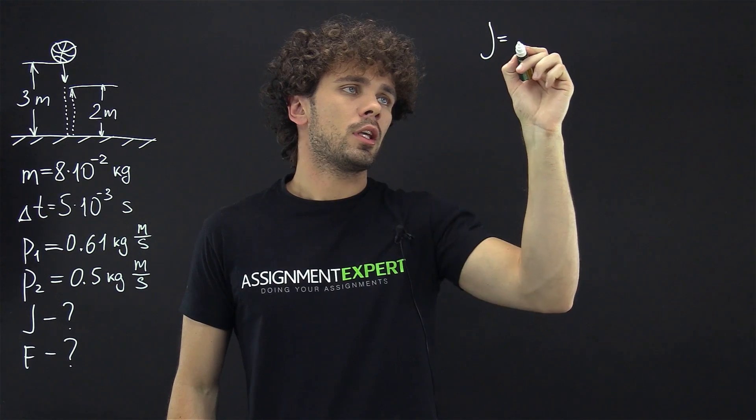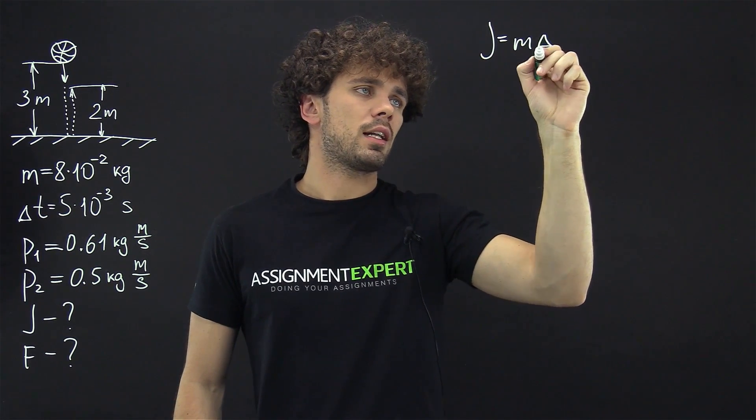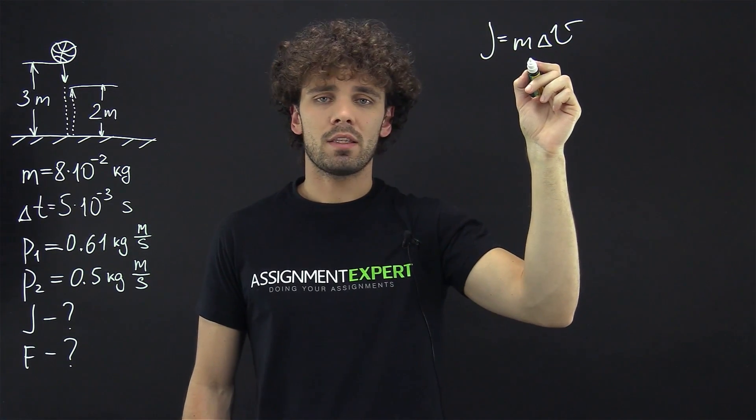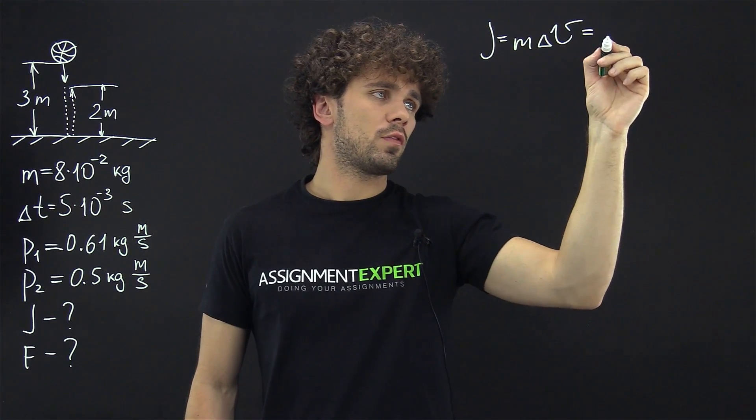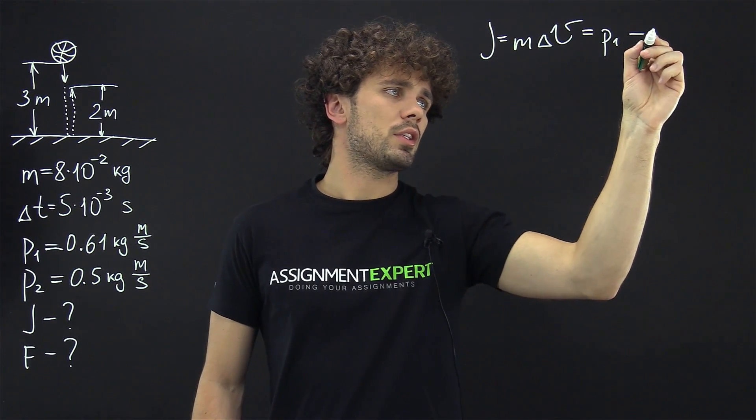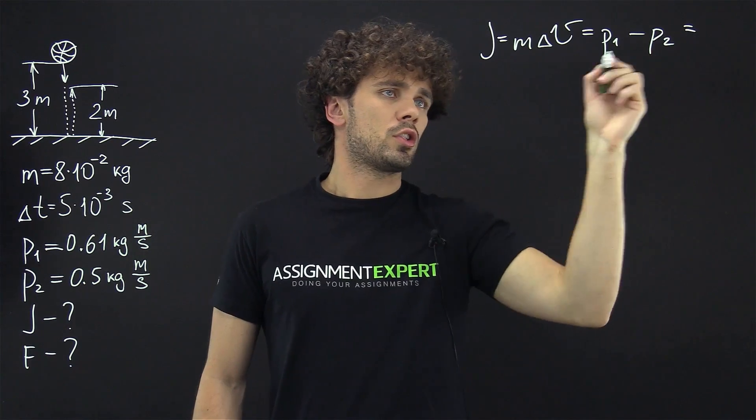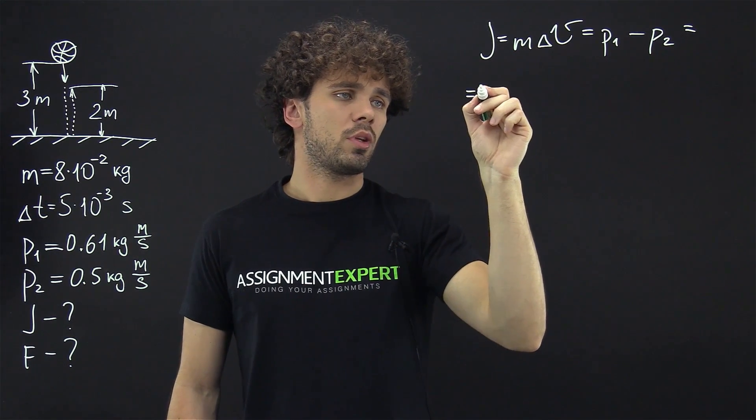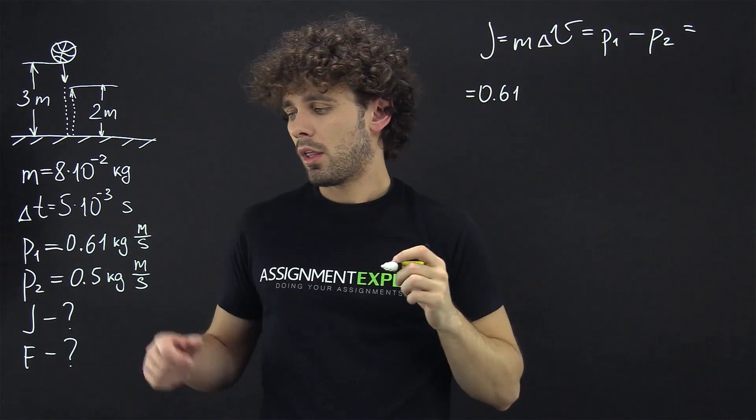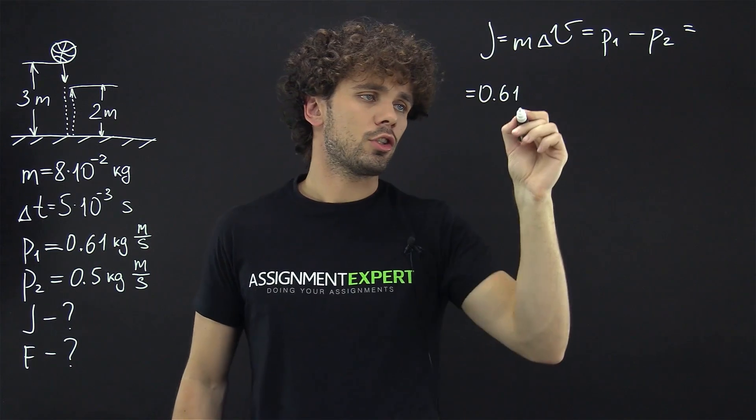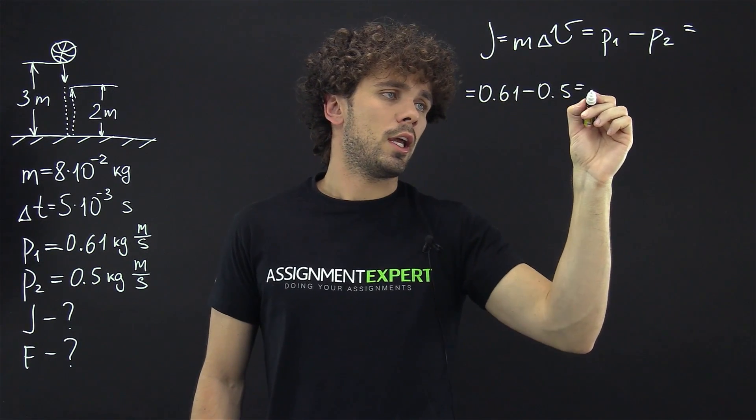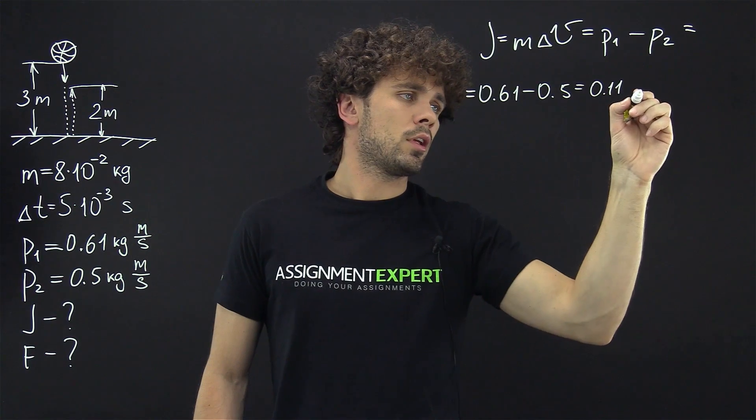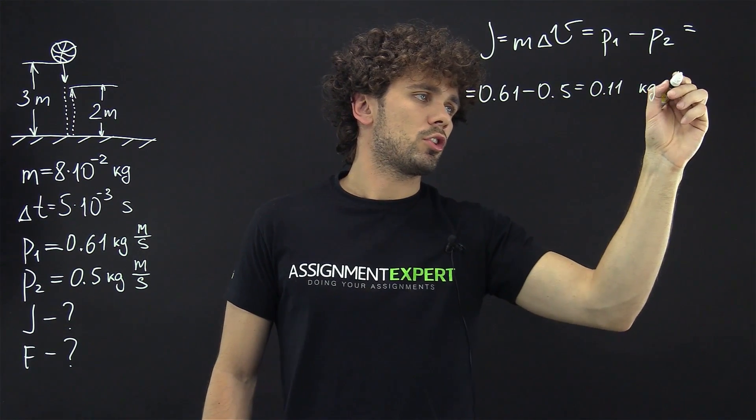Impulse J equals m times delta v. So we have the mass of the ball and the change of the speed. And this is actually the difference of two momentums p1 minus p2. So the impulse of the ball J will be 0.61 the momentum of the ball before the collision minus 0.5 momentum after the collision. And we get 0.11 kilograms times meters per second.